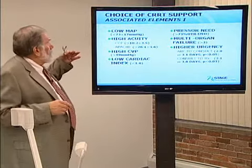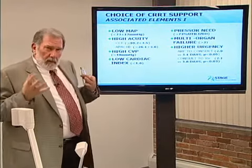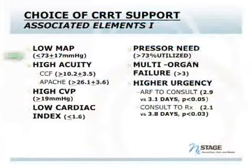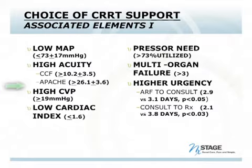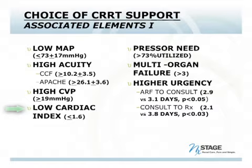If we look at specifics: a mean arterial pressure less than 73 probably favors continuous therapy. High acuity — a high CCF score or high Apache score — probably favors continuous. High CVP, again related to volume, favors continuous. Low cardiac index, again a hemodynamic indicator, favors continuous. If you're needing a lot of pressors to maintain that low mean arterial pressure, continuous is again preferred. All of this comes back to hemodynamics.